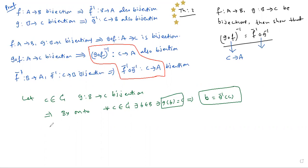Next, F: A→B is bijection. F: A→B bijection means bijection and onto.